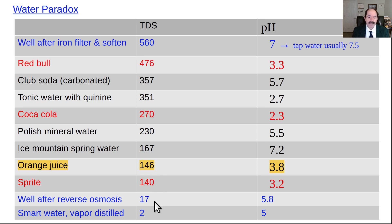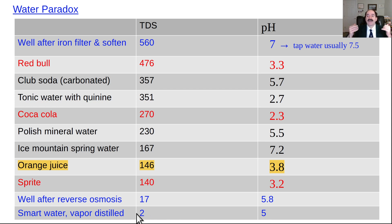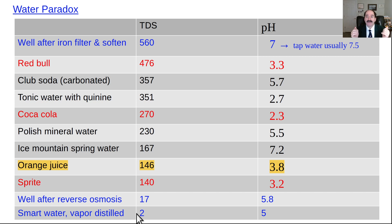With distillation there's an even more dramatic drop — all the way down to zero to two for total dissolved solids. Notice the pH also comes down to about 5.8 with reverse osmosis, and about 5 with distillation. So here's the paradox: the more you purify the water — to get all the bad things out, the aluminum, the estrogenics, the fluoride and other toxic things — you pay a price in that it becomes hypoosmolar and acidic.